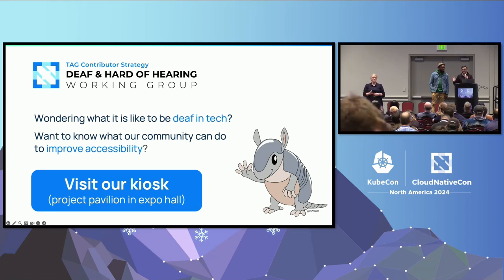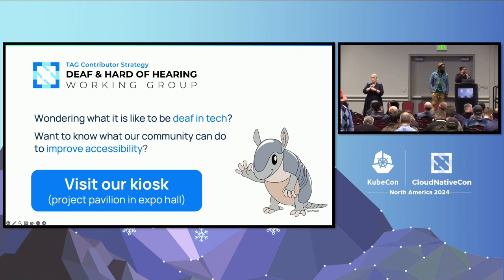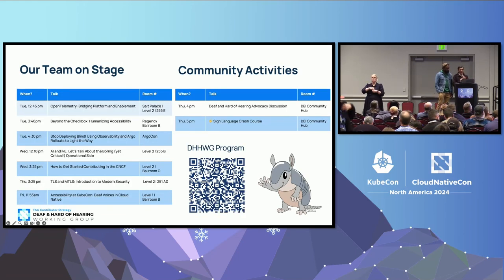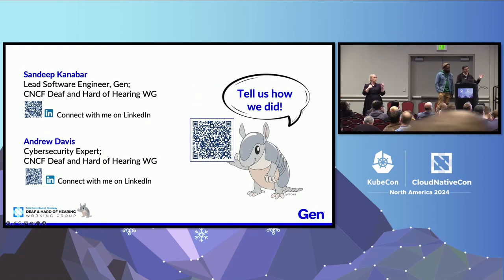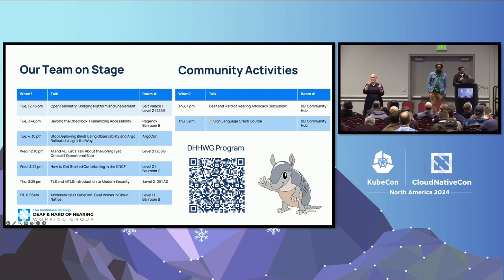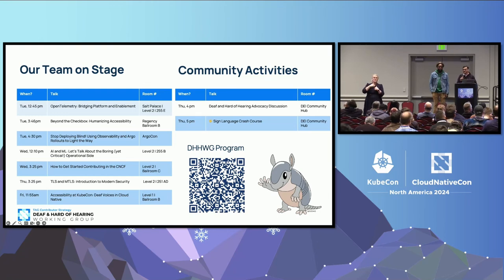We both are members of the Deaf and Hard of Hearing Working Group. We are working to bring out a set of accessibility best practices on how to make conferences, events, and meetings more inclusive. We have a DEI community hub happening at about four o'clock — feel free to drop by. We also have a sign language crash course that is guaranteed to be fun. If you can stop by the DEI community hub in room 255B, we would really love it. Thank you.